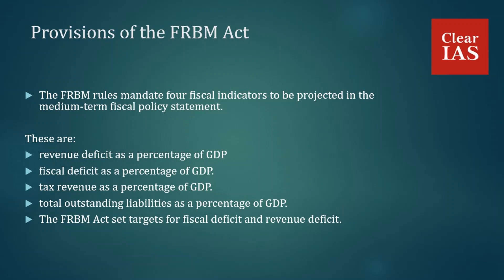The act provided that certain documents are to be tabled in the Parliament of India along with the budget annually, with regard to the country's fiscal policy. These documents include the Medium Term Fiscal Policy Statement, the Fiscal Policy Strategy Statement, the Macroeconomic Framework Statement, and the Medium Term Expenditure Framework Statement. These documents are mandated by the FRBM Act to be tabled along with the budget annually in Parliament.